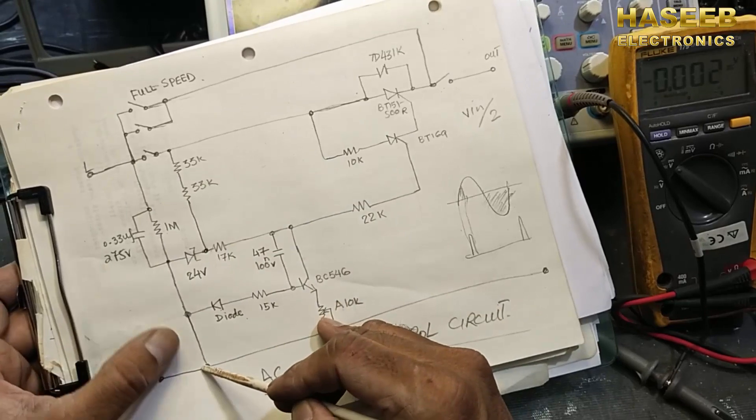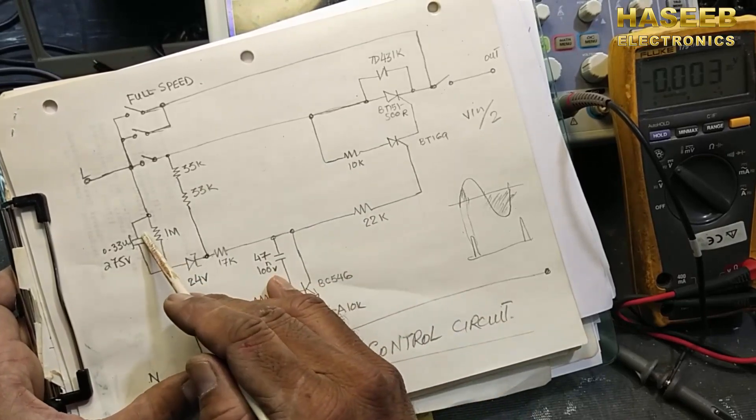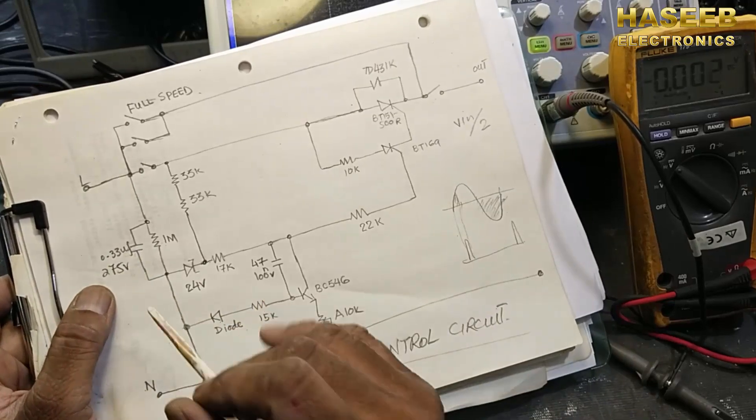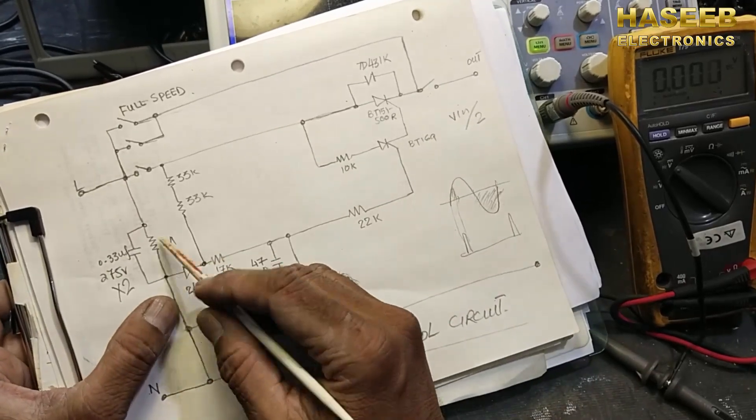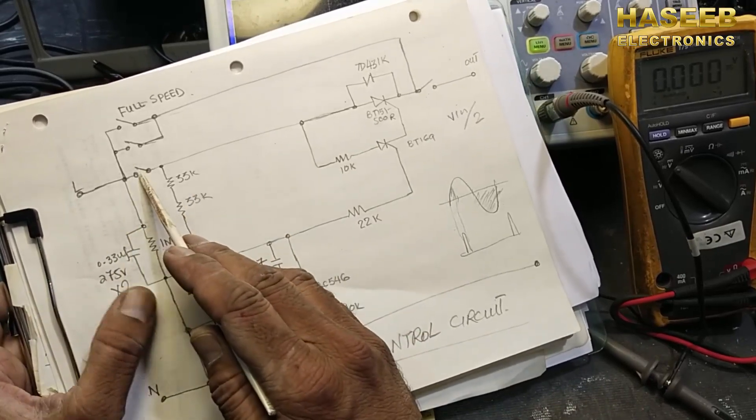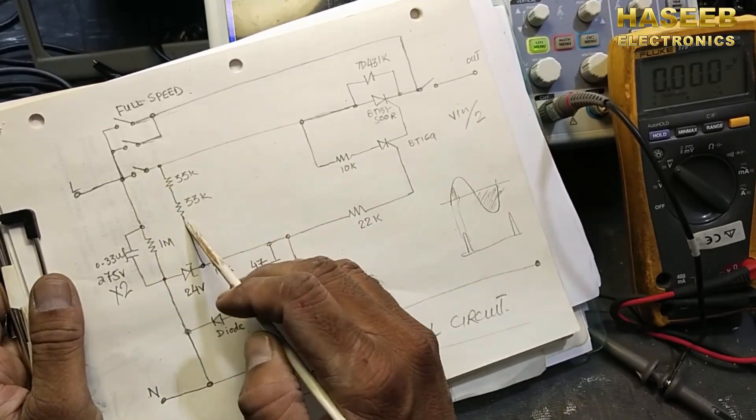From line to neutral, we have a capacitor here, 0.33 microfarad X2 capacitor, and we have one megaohm resistor here. So this RC network will remove the noises. Then we have this switch, it will pass the voltage.